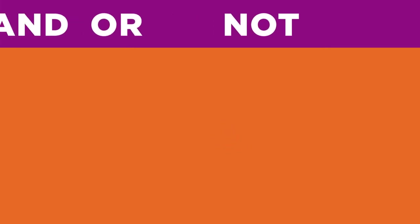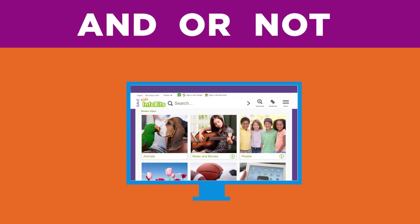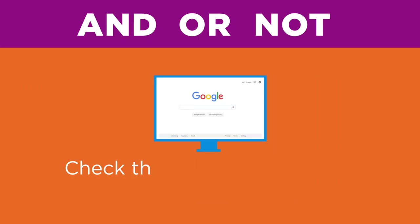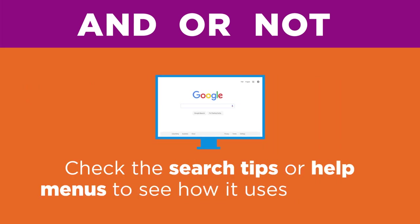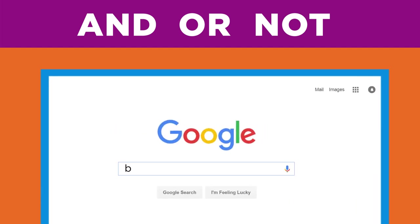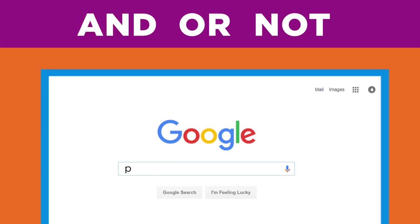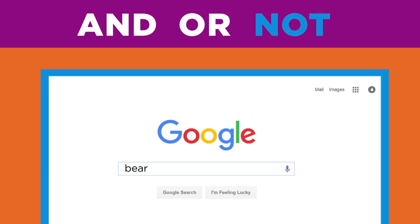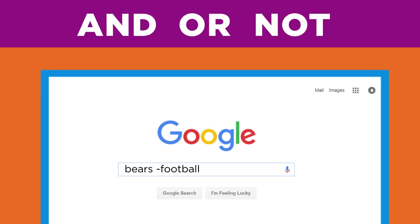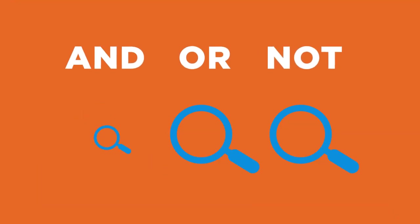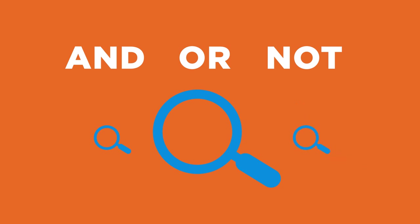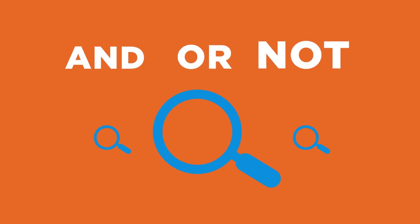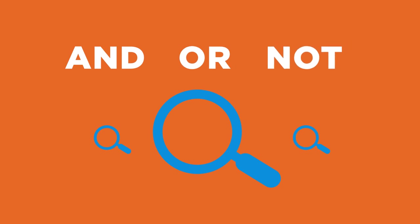So far, our examples have shown you how to enter Boolean operators when searching in library databases. For an internet search engine, check the search tips or help menus to see how it uses Boolean. For example, Google automatically uses the Boolean operator AND between keywords, so all keywords you enter in the search box will be included in your results. To use the OR command, you must enter the word OR between two keywords. For the NOT command, Google uses a minus sign in place of the operator. AND narrows your search. OR broadens your search. NOT narrows your search. These three tiny words make a huge difference in your search results.